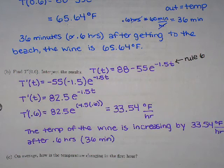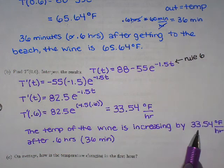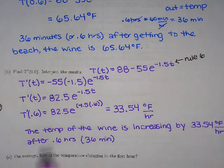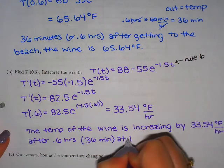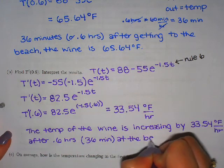It's increasing by 33.54 degrees per hour after 0.6 hours or 36 minutes, whatever helps you make more sense in your head. 0.6 hours makes very little sense to me. But 36 minutes I can actually think about that. So the temp of the wine is increasing by 33.54 degrees per hour after 0.6 hours or 36 minutes at the beach.